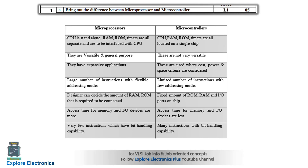So we can understand the differences now. In a microprocessor, the CPU is standalone — RAM, ROM, and timers are separate and interfaced to the CPU. In a microcontroller, it has a CPU with RAM inside, ROM inside, and also timers — all present in a single chip. But in a microprocessor, all are externally connected.